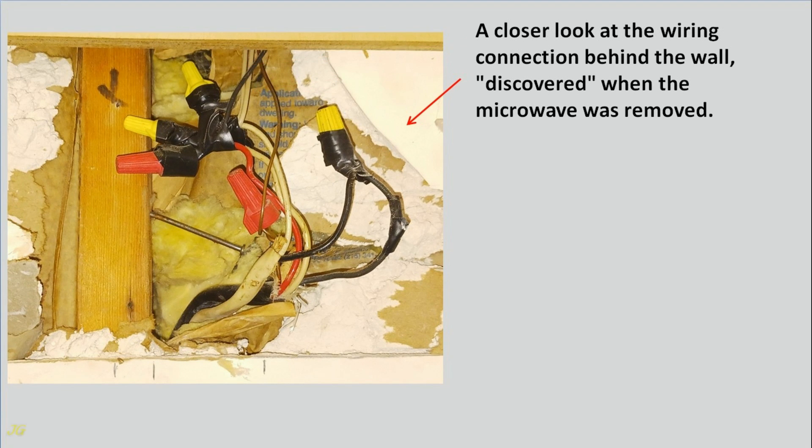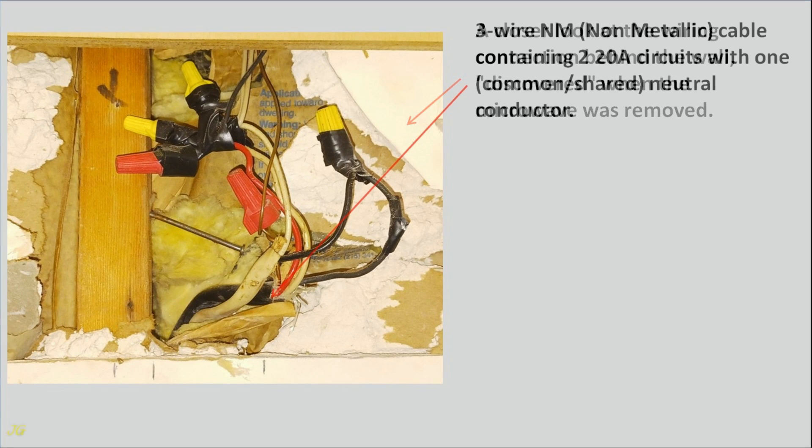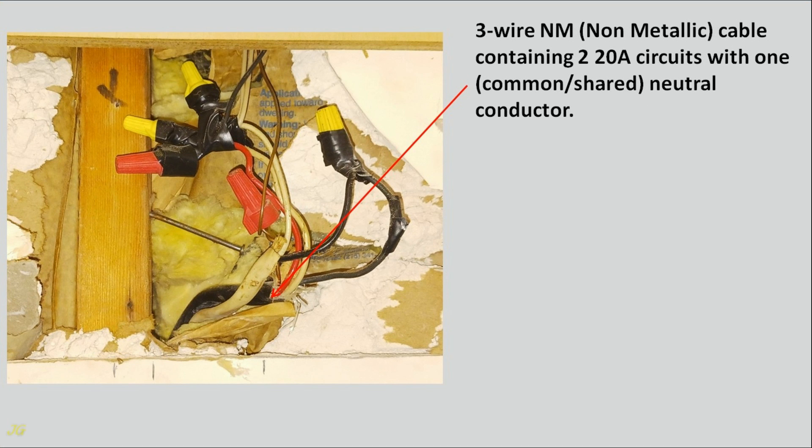A closer look at the wiring connection behind the wall, discovered when the microwave was removed. 3-wire NM non-metallic cable containing 220-amp circuits with one common shared neutral conductor.